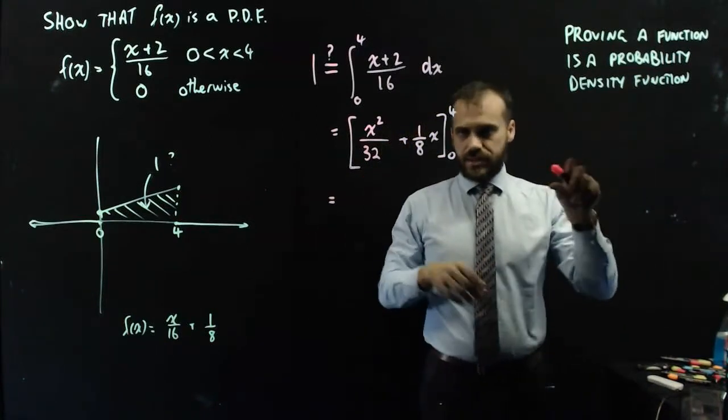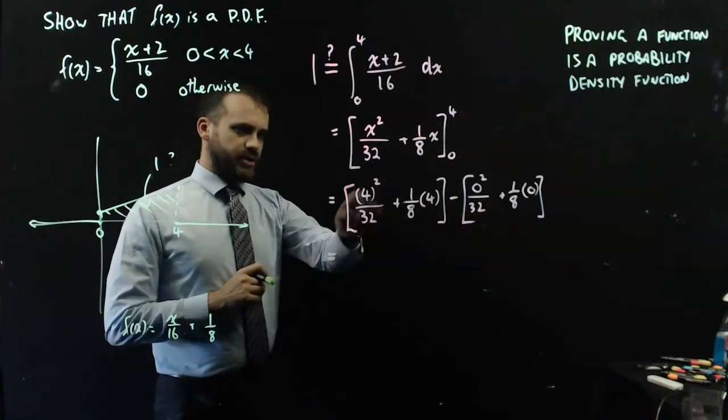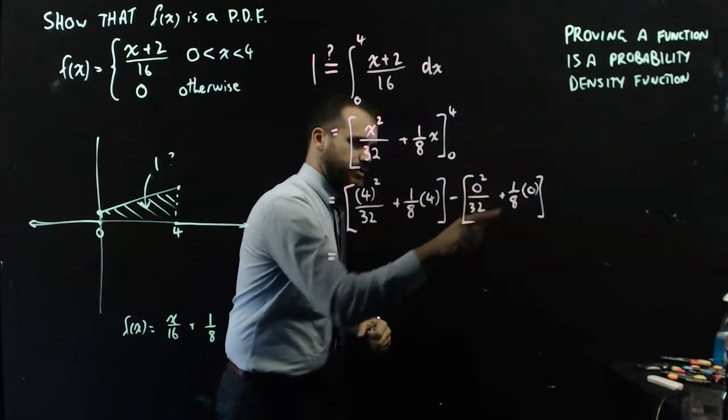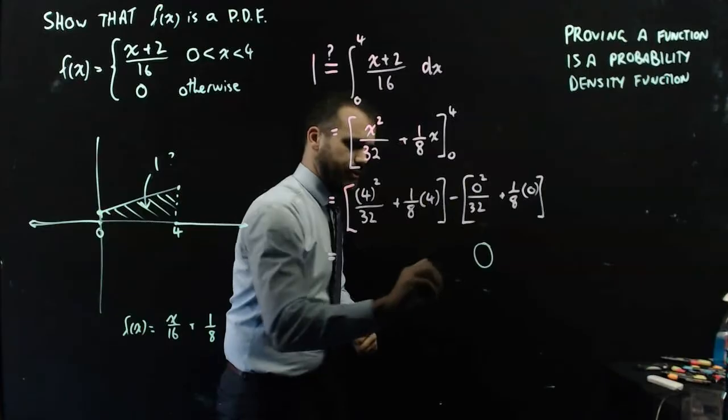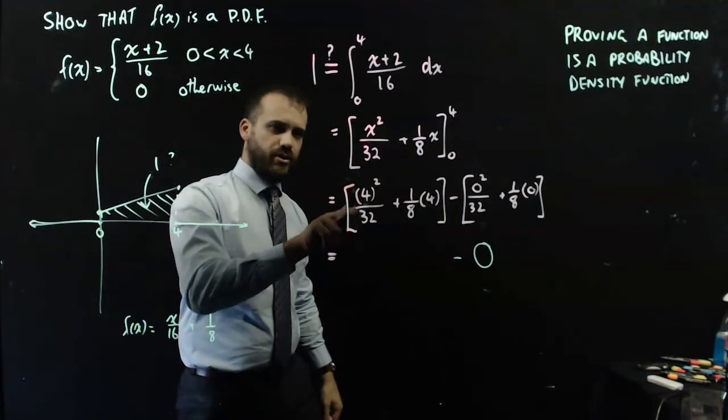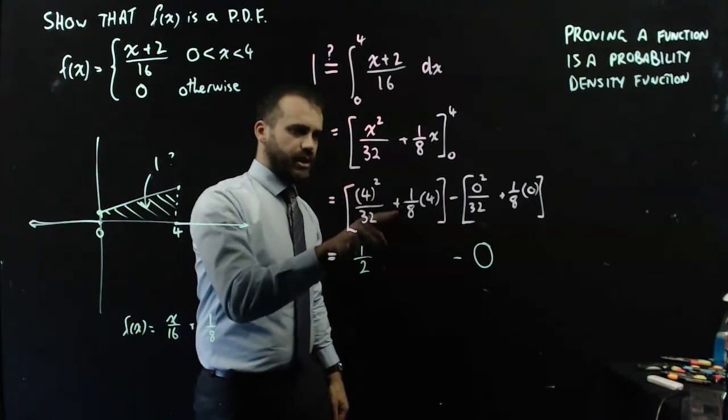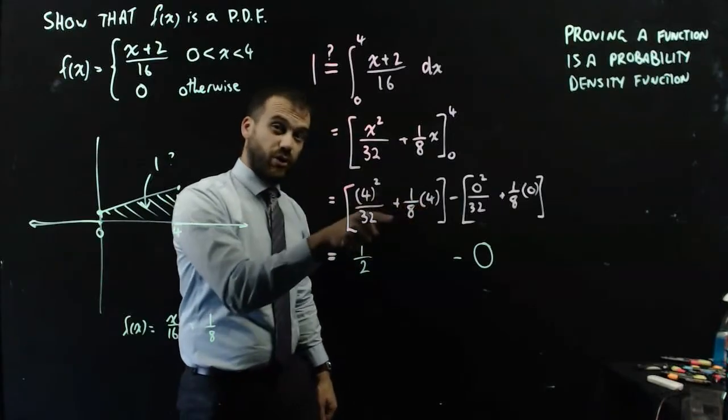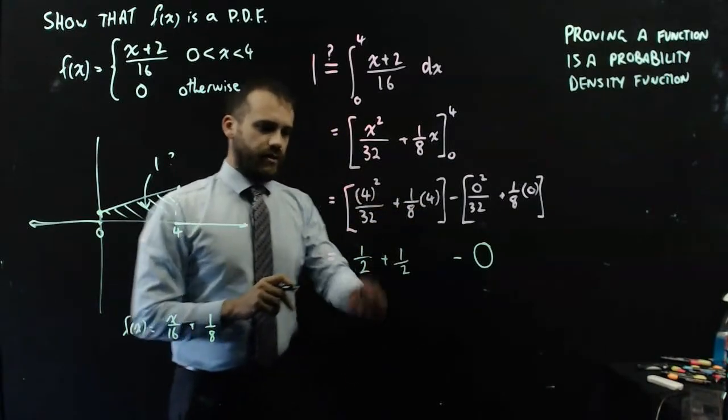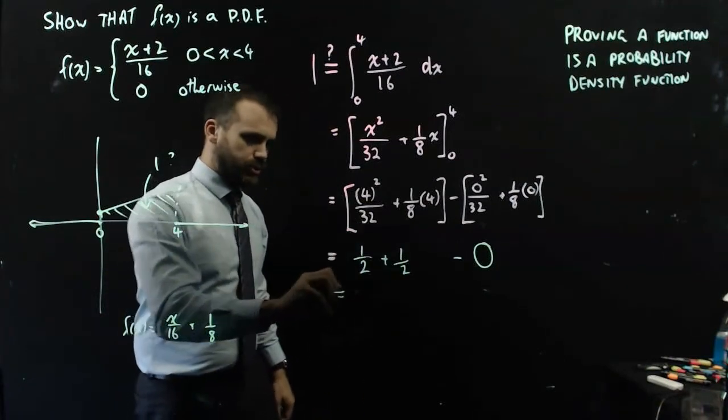Now I'm going to sub in 4 and sub in 0, and subtract one from the other. All right, so we're in a pretty good spot now, I've subbed 4 in, I've subbed 0 in. Now this bit here, 0 squared over 32 plus 1 eighth times 0, that's just 0, happens pretty often with integration. And this bit here, 4 squared over 32, that's 16 divided by 32, which is 1 half, plus 1 eighth times 4, which is 4 over 8, which is 1 half. So now I have 1 half plus 1 half minus 0, which is equal to 1.